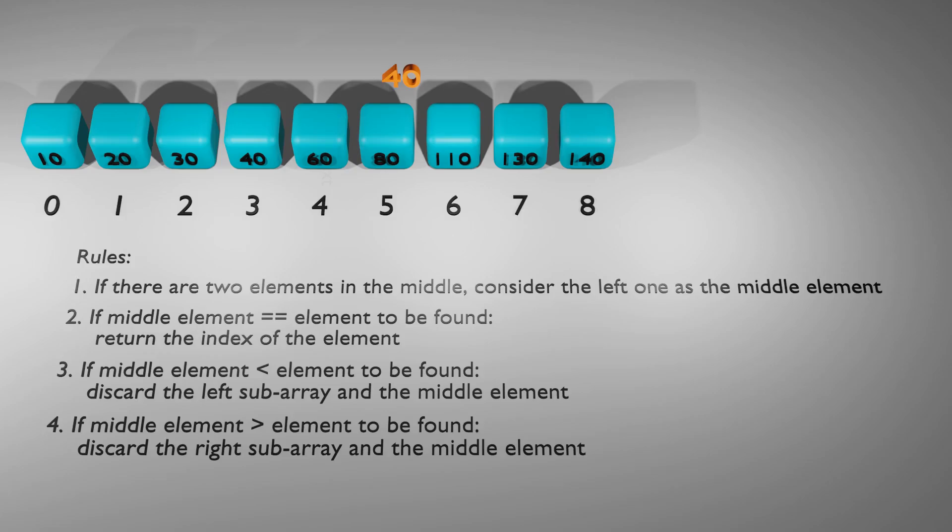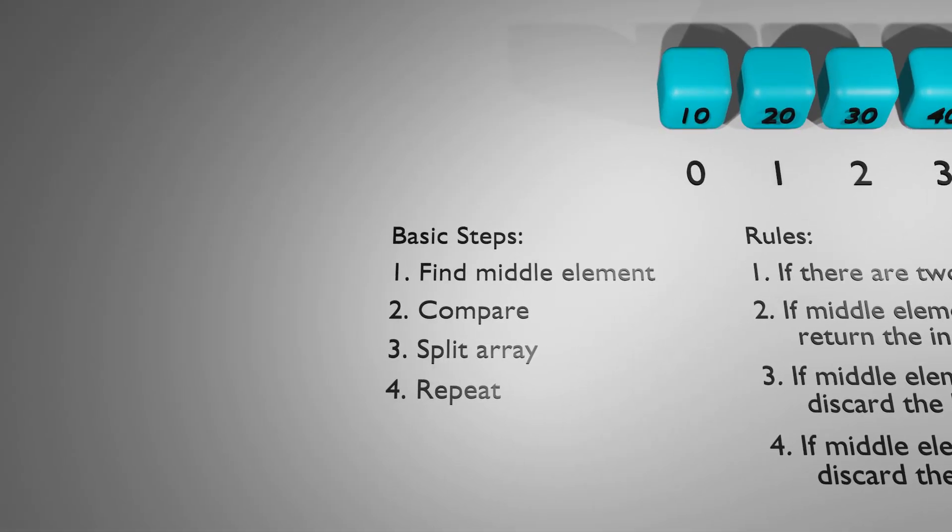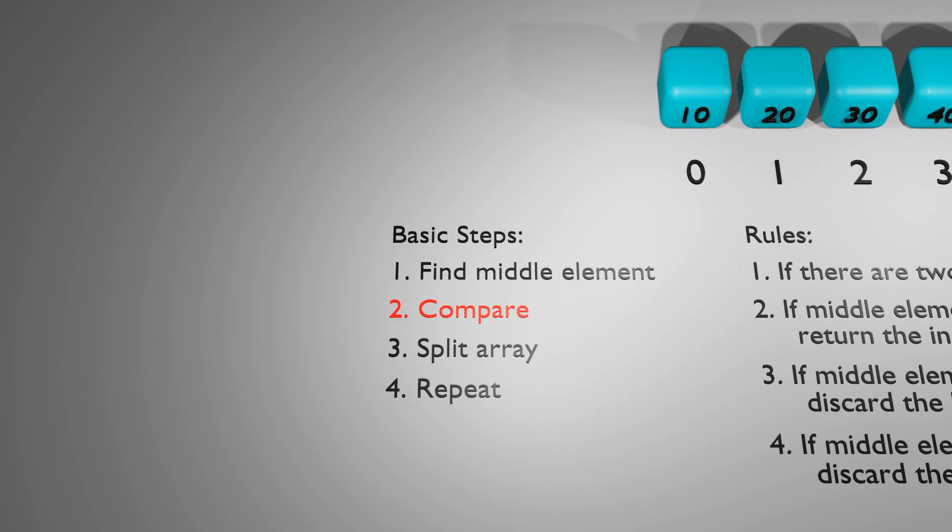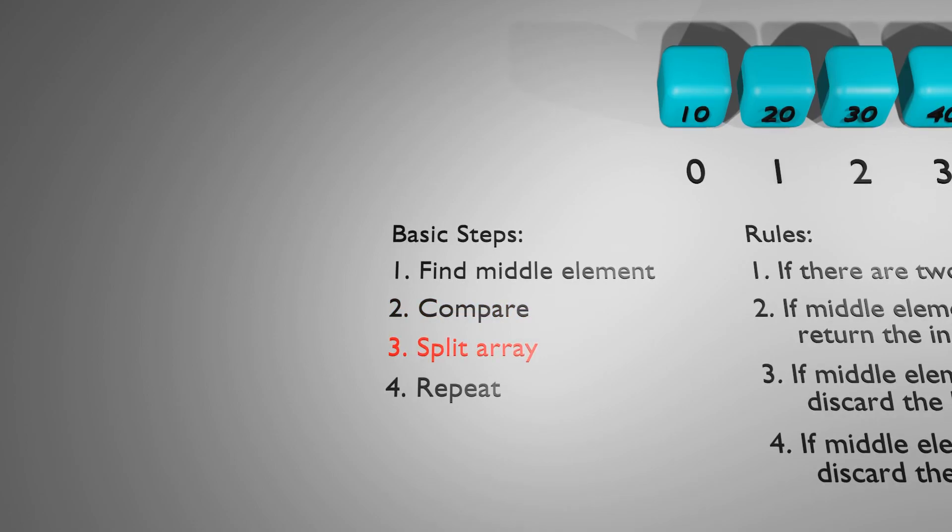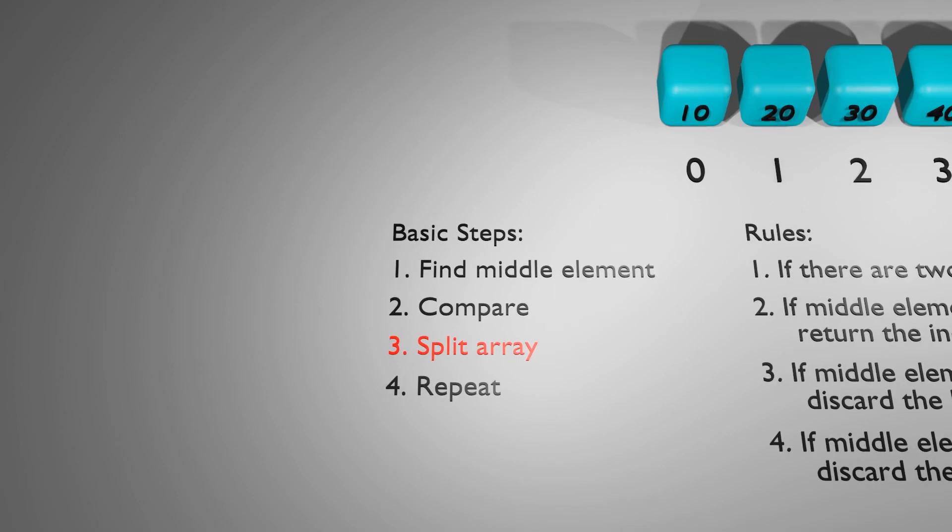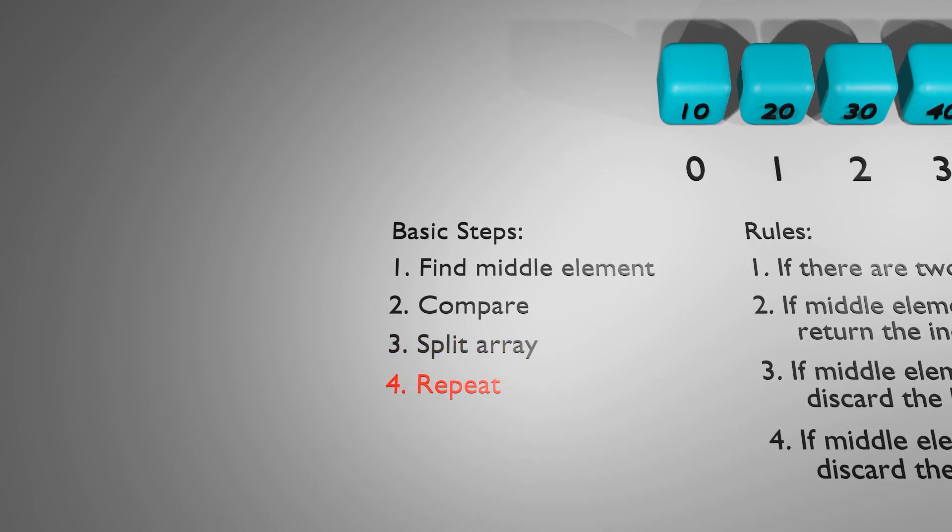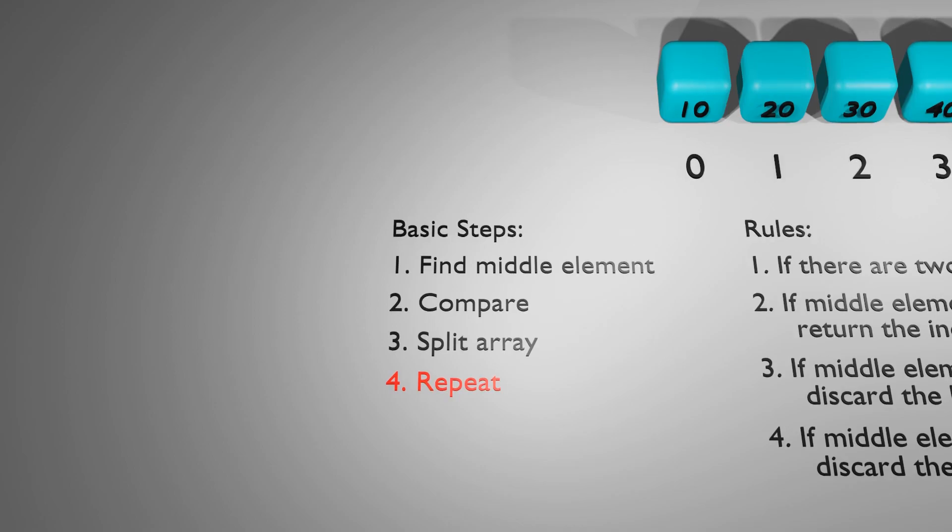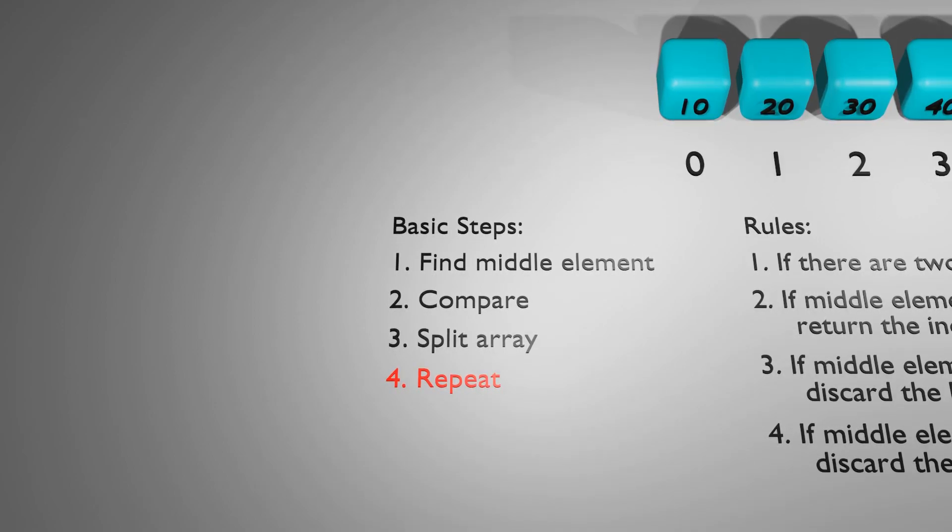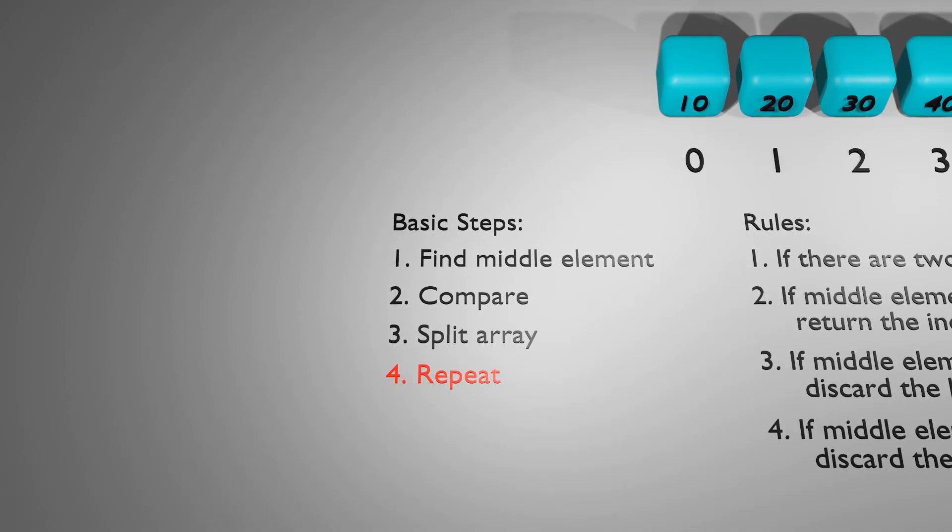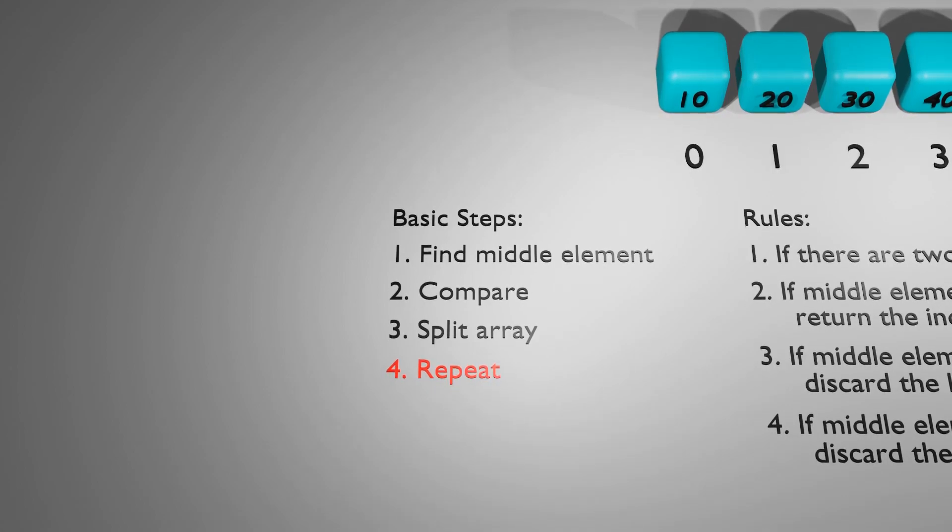Now, let's go over the four basic steps that we will perform in binary search. The first step is to find the middle element of the given array. The second step is to compare the middle element with the element we're trying to find. The third step involves splitting the array into two parts and discarding one of them. The fourth step is where we repeat the process with the sub array under consideration until we either find the element or determine that it is not present in the array.